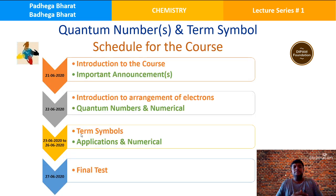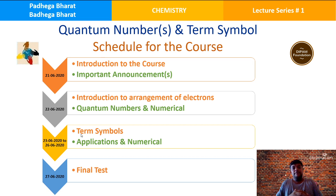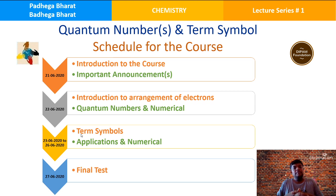The schedule for Quantum Numbers and Term Symbols: today is just the introduction. From tomorrow, Monday, you will have introduction to the arrangement of electrons, quantum numbers, and numericals — a basic plus-two topic covered to build rapport. From 23rd June, Tuesday, up to Friday, we will explicitly cover all concepts in term symbols along with applications and numericals. On the last day, 27th June, there will be a final test where 40% marks are the minimum qualification to gain a certificate. Daily tests will also be held as during the online course on chromatography.